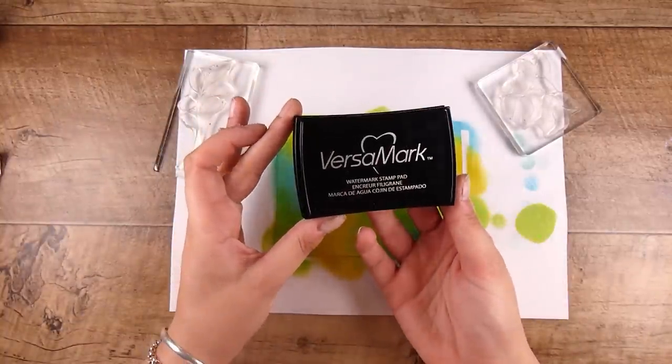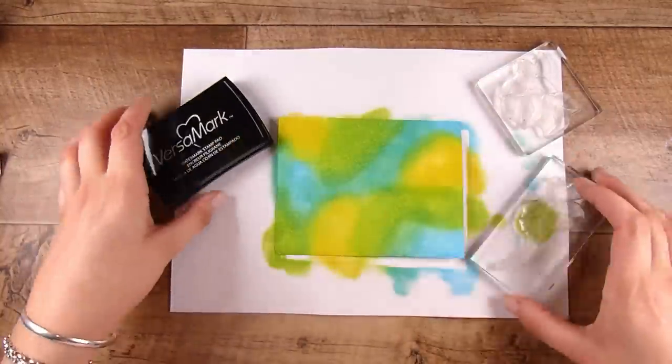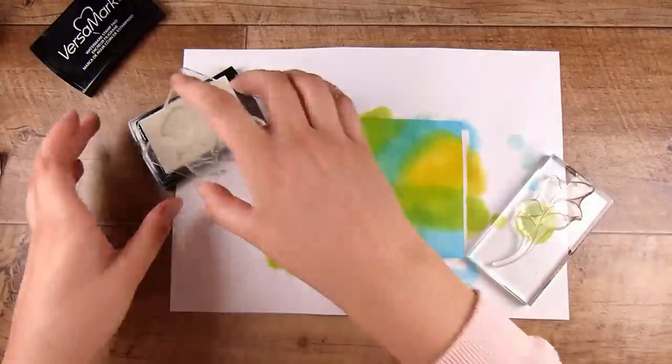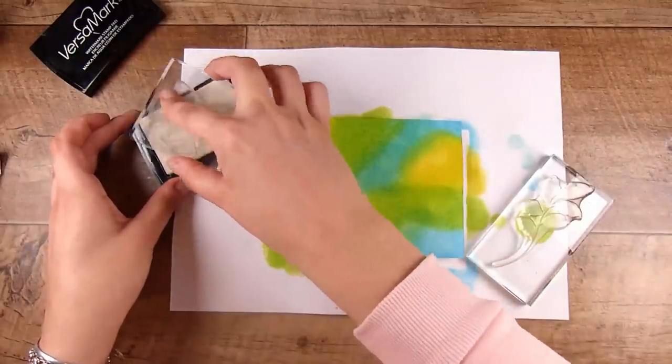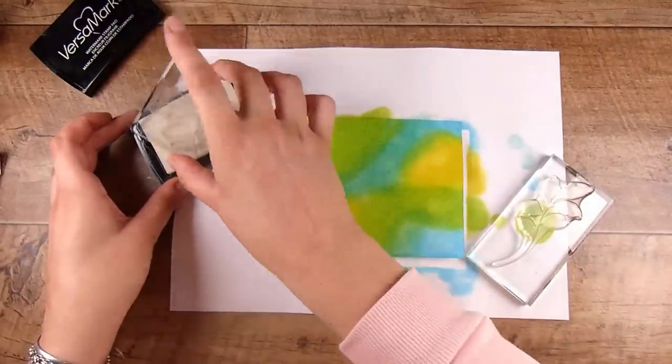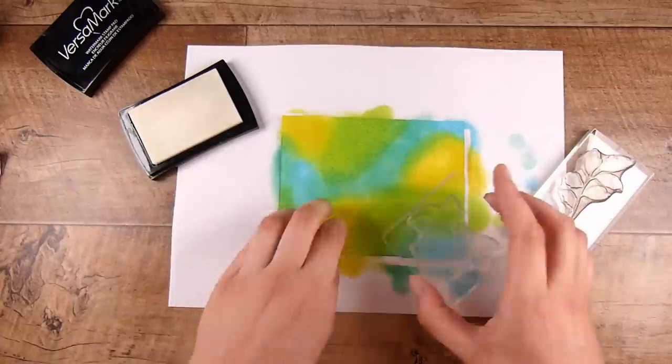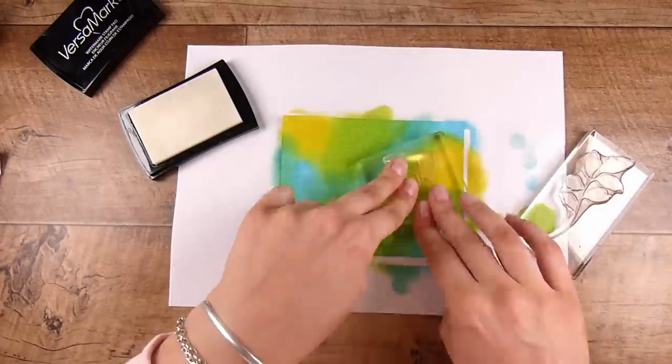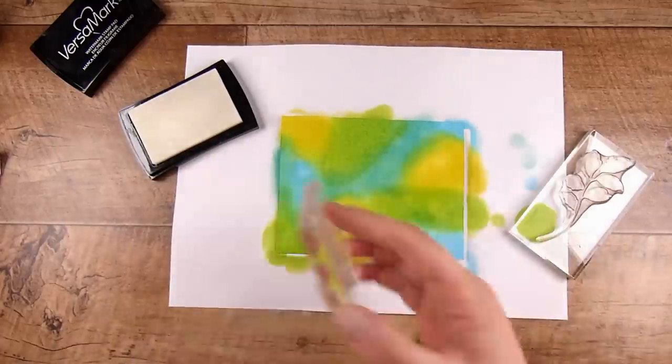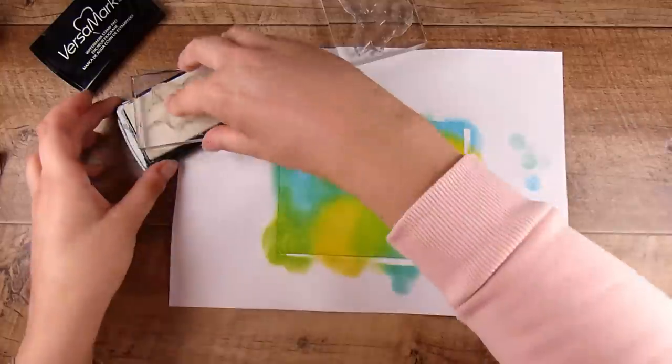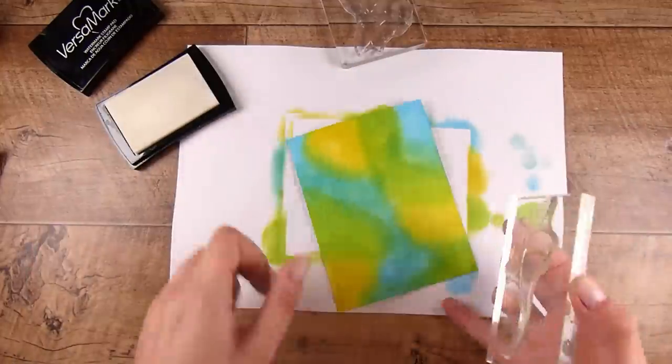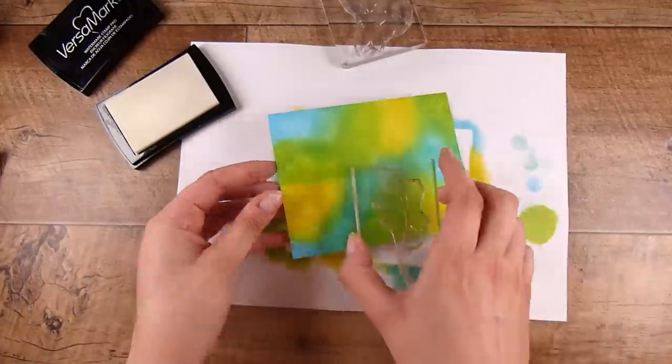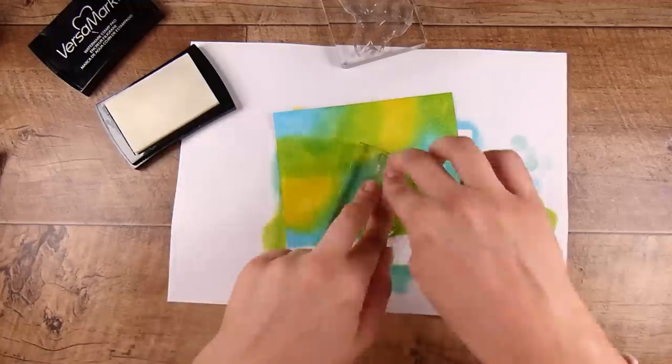I'm going to be using some Versamark sticky embossing ink for this one, but any sticky embossing ink obviously is going to work. Something else that you could add to help ensure that you just get embossing powder where you want it is by using an anti-static powder tool. There are several different versions out there on the market. I know some people just use cornflour and a sock or a little pouch if you're able to sew.